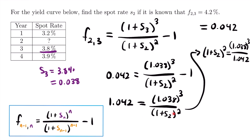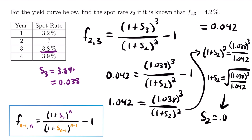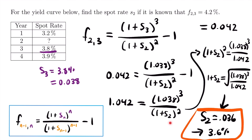Taking the square root of both sides: one plus s sub two equals the square root of 1.038 cubed divided by 1.042. Taking the square root of that expression and subtracting one, we find that s sub two equals 0.036, which is 3.6%. That is the spot rate s sub two that was originally unknown in this table.